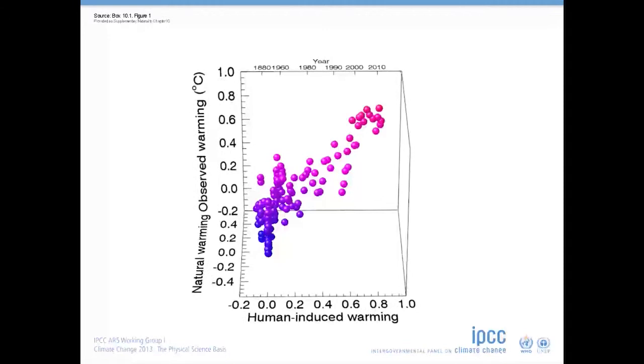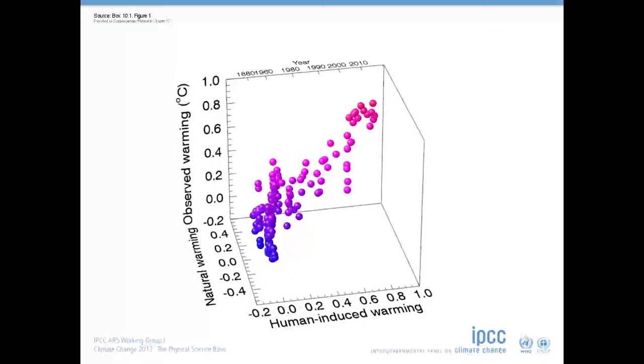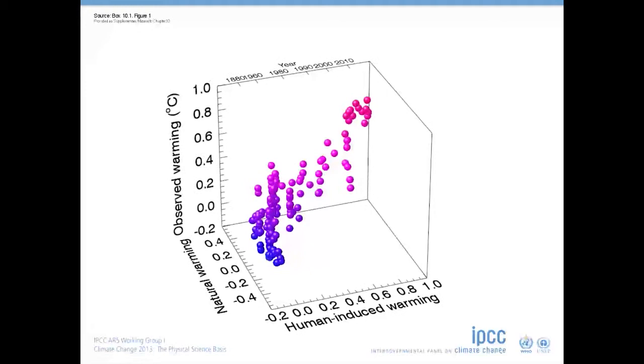Their position in one horizontal direction tells us how much the models warmed because of human influence. And their position in the other direction indicates how much the models warmed or cooled due to natural factors.